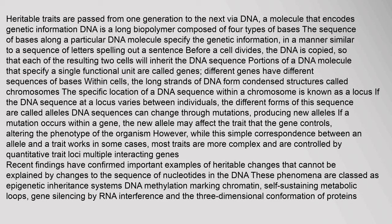Heritable traits are passed from one generation to the next via DNA, a molecule that encodes genetic information. DNA is a long biopolymer composed of four types of bases. The sequence of bases along a particular DNA molecule specifies the genetic information, in a manner similar to a sequence of letters spelling out a sentence. Before a cell divides, the DNA is copied so that each resulting cell will inherit the DNA sequence. Portions of a DNA molecule that specify a single functional unit are called genes. The long strands of DNA form condensed structures called chromosomes, and the specific location of a DNA sequence within a chromosome is known as a locus.